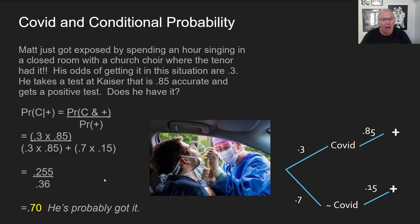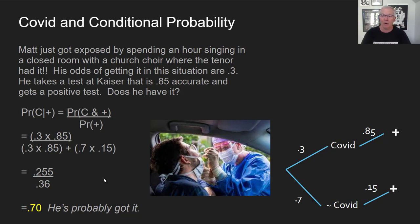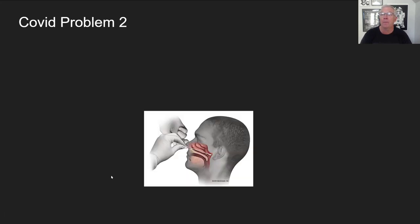Plugging in those numbers from the tree, Matt went from a prior probability of having COVID at 30%. The test, which is 85% accurate, comes back positive. That elevated our answer to 0.7. So he's probably got it — 70% likely. That's a lot higher than 30%. With this new information cranked through the conditional probability rule, we get an answer of 70%.